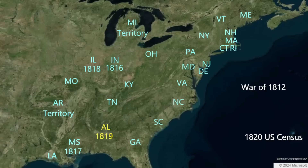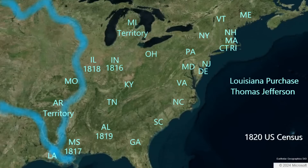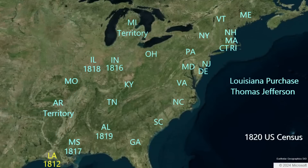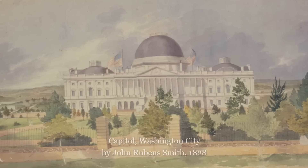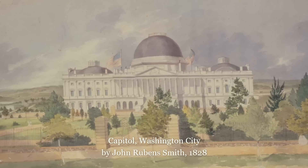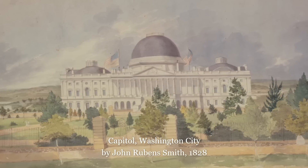Mississippi achieved statehood in 1817, and Alabama entered the Union in 1819. Nearly 20 years before 1820, Jefferson's Louisiana Purchase had already resulted in the first state west of the Mississippi River, Old French Louisiana. Louisiana became a state in 1812. The Missouri Compromise of 1820, the year of this census, resulted in the creation of two states — one free and one slave.